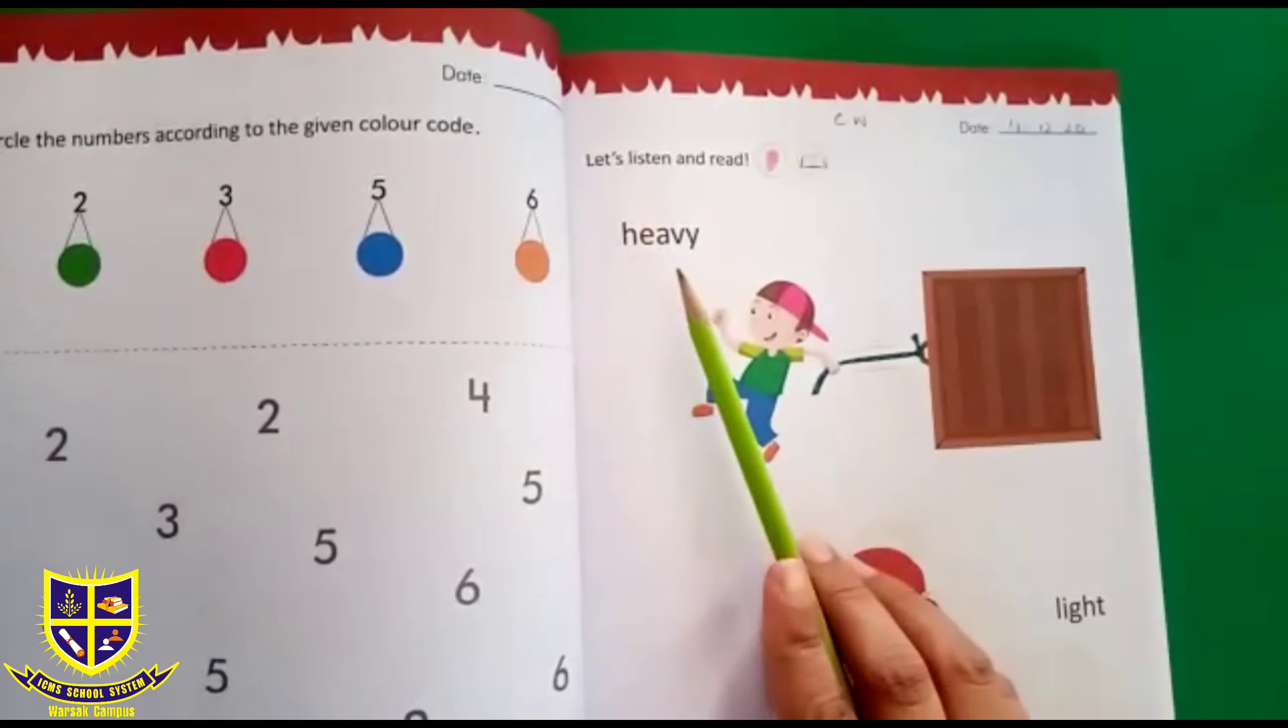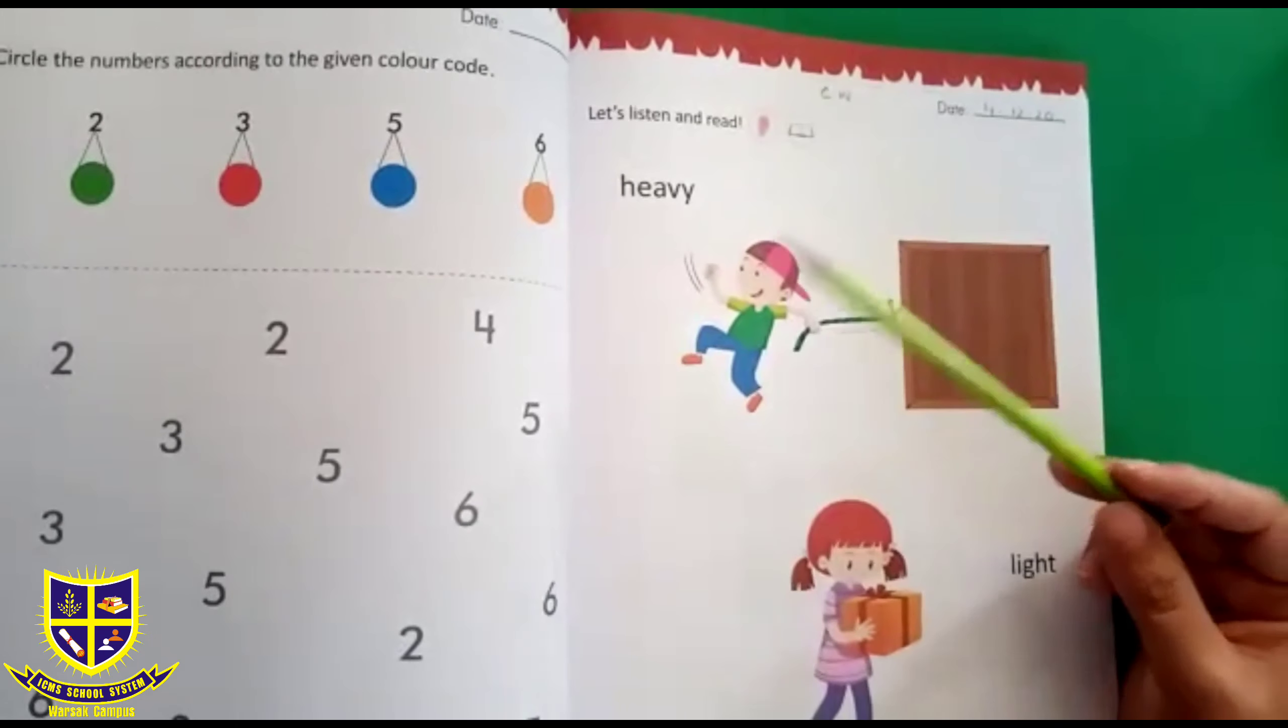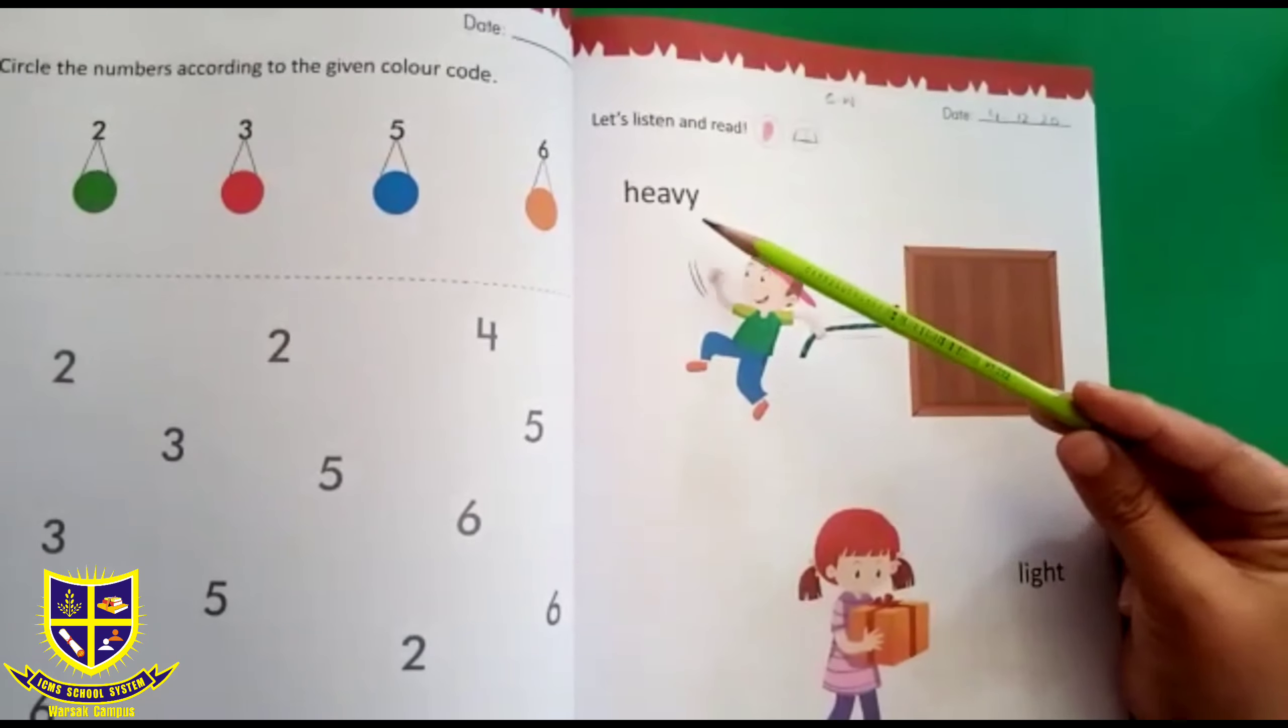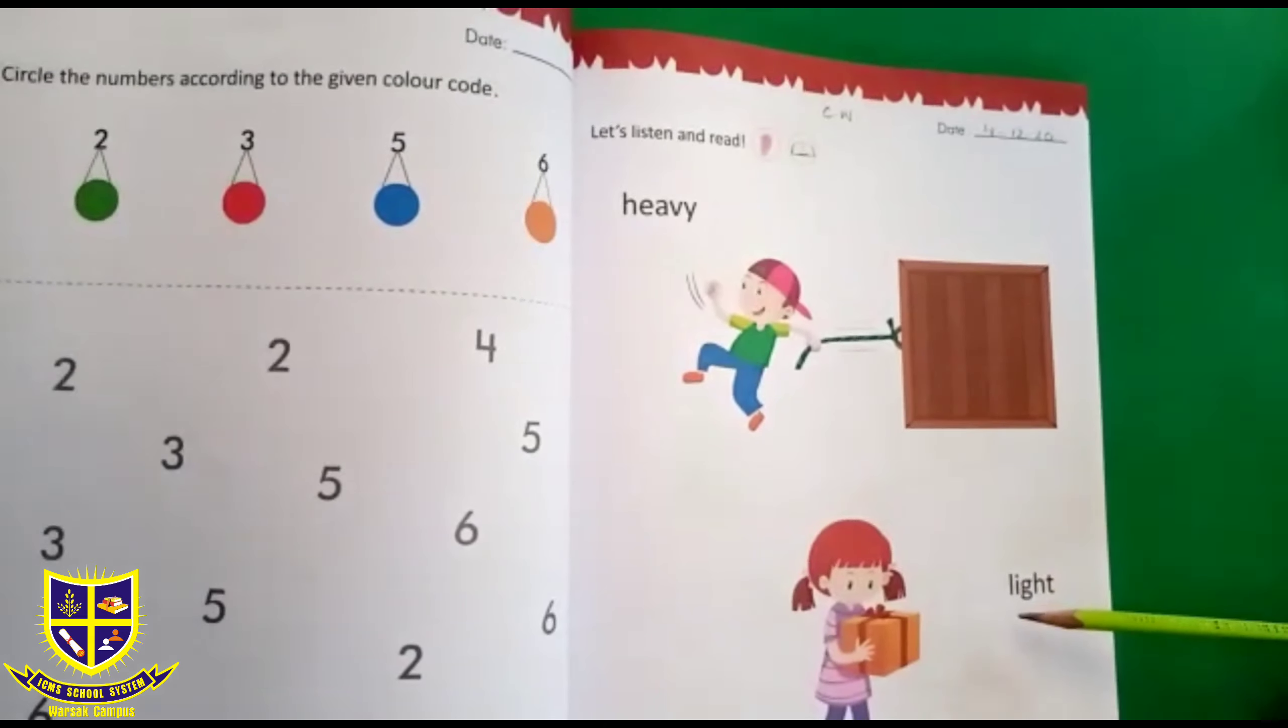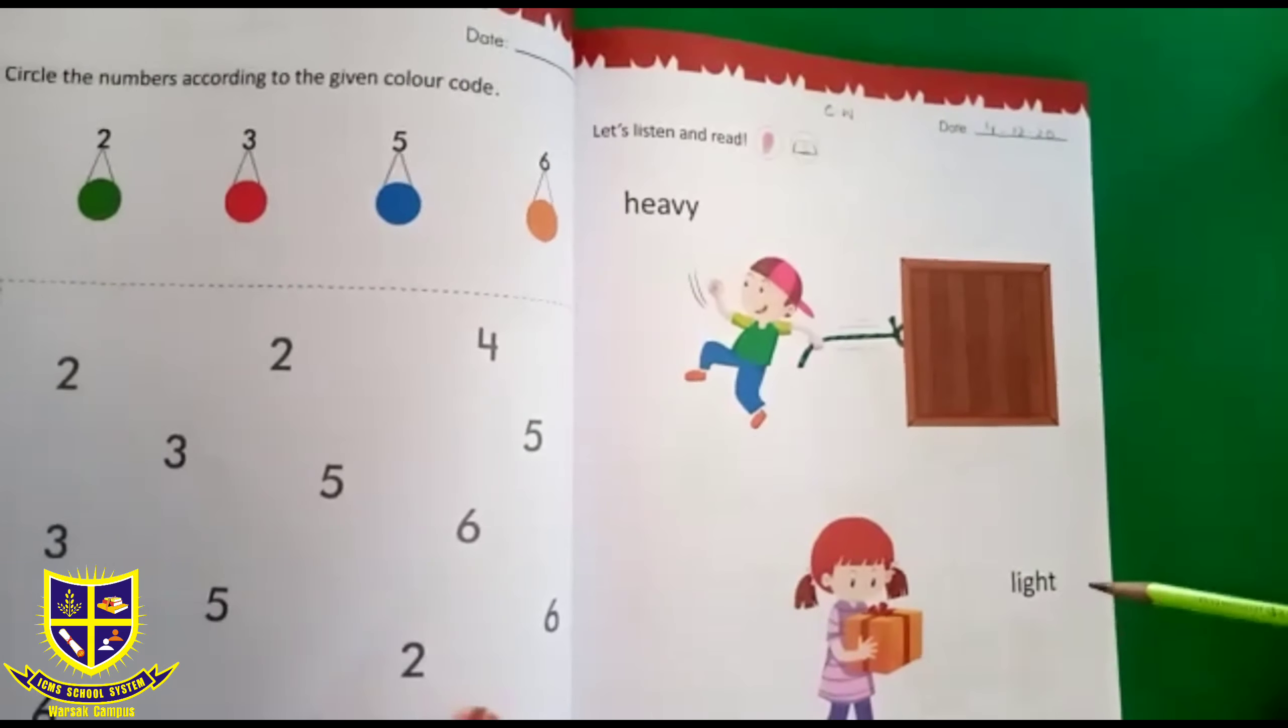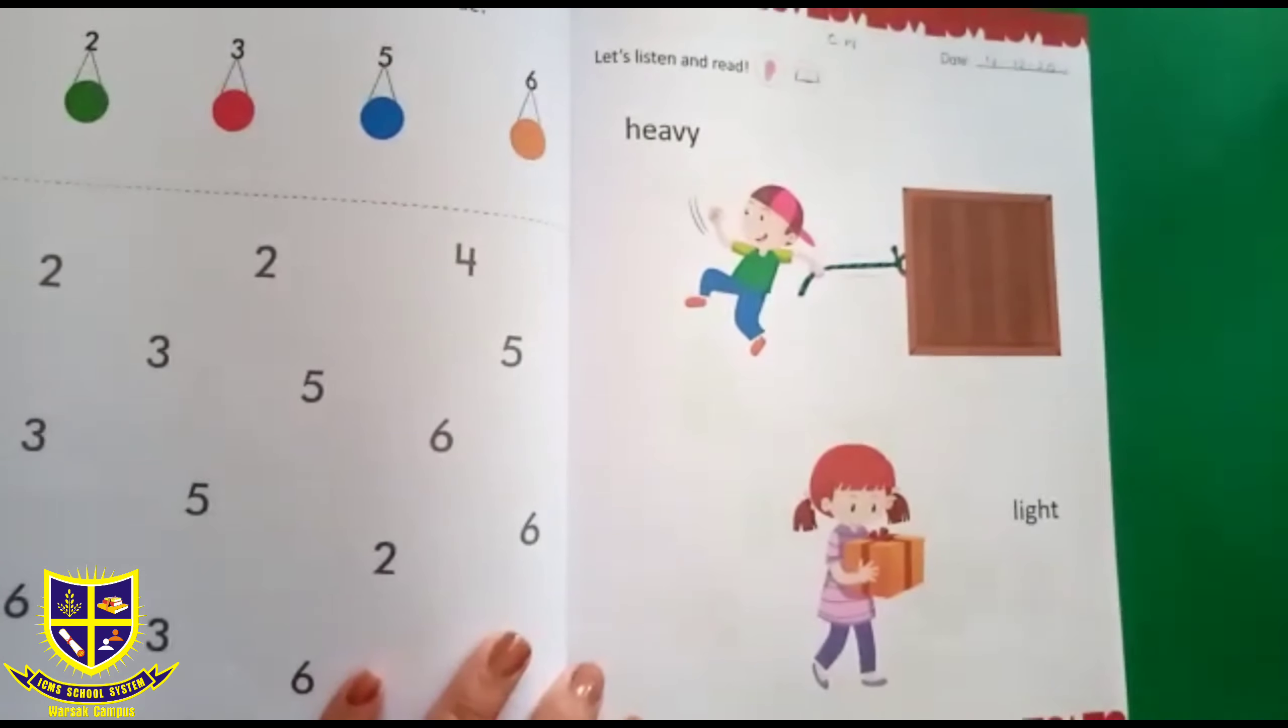And today's topic is heavy and light. What does heavy mean? Heavy means bhaari. And what does light mean? Light means halka. To make you people understand what is heavy and what is light, I have some gadgets here.